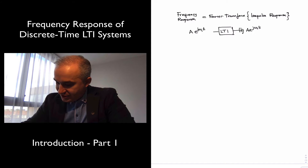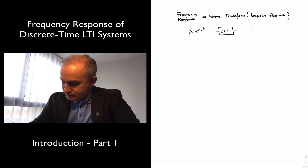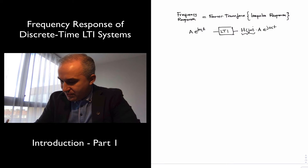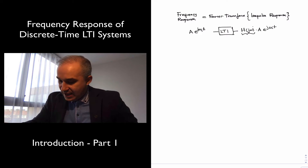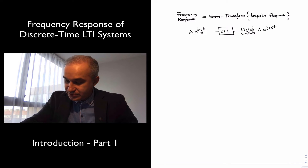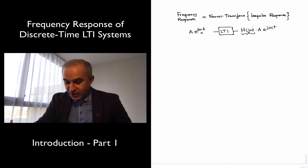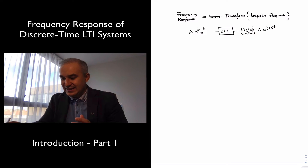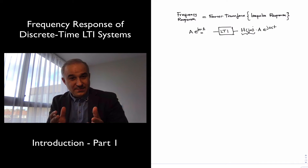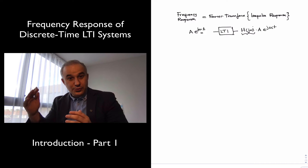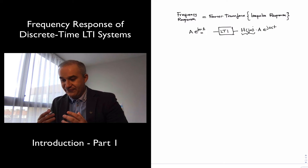In continuous time we saw H of j omega as the frequency response. This H of j omega has a magnitude and a phase, so it is affecting the amplitude and the phase. For a particular frequency you just evaluate it at that frequency. The frequency response tells you, as a function of any frequency, what is going to be the change in amplitude and phase — whether this LTI system is going to behave as a low-pass filter, a high-pass filter, a band-pass filter, or a band-stop filter. It tells you exactly which frequencies are going to pass through, which are going to be attenuated, and how the phases are going to change.